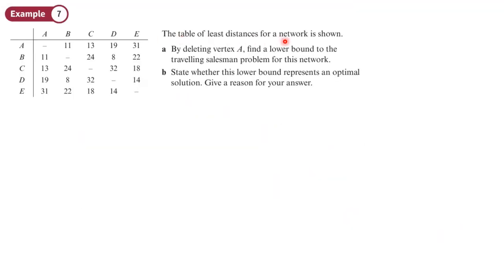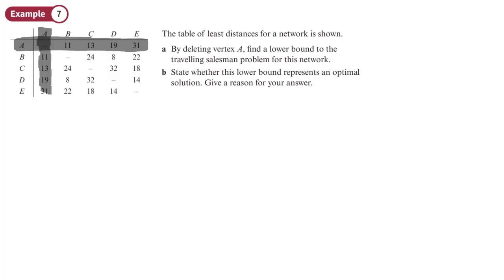The table of least distances for a network is shown. By deleting vertex A, find a lower bound for the travelling salesman problem for this network. So let's delete vertex A from our distances table — that row and column are gone. We'll start at the next vertex, vertex B, and we're going to be using Prim's algorithm.